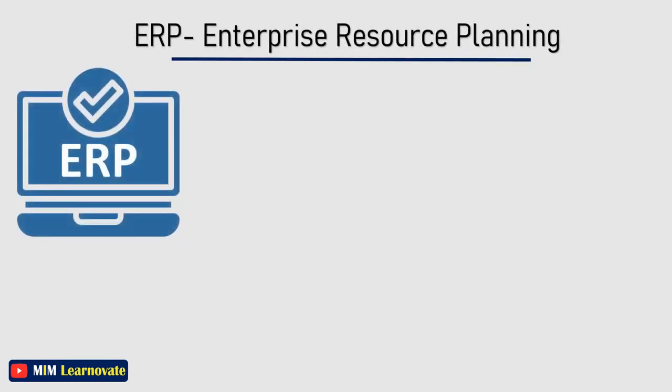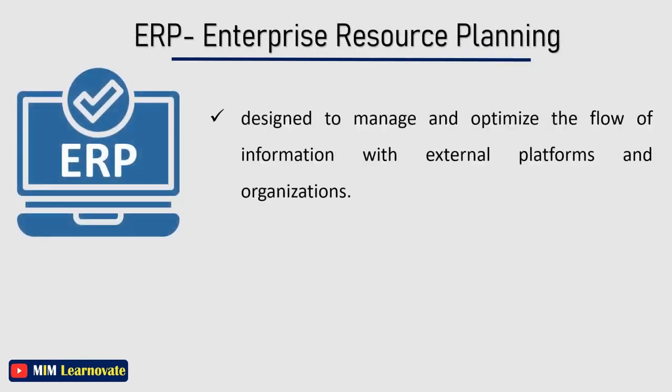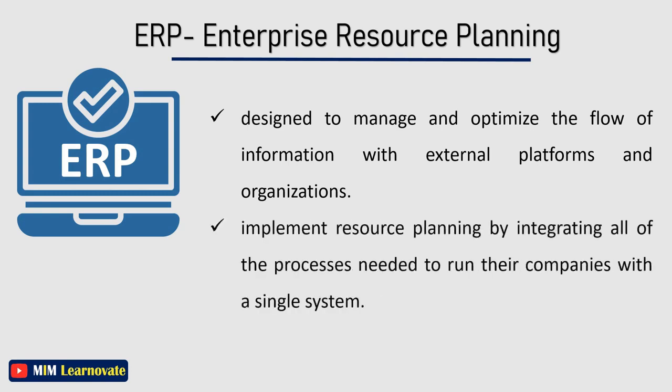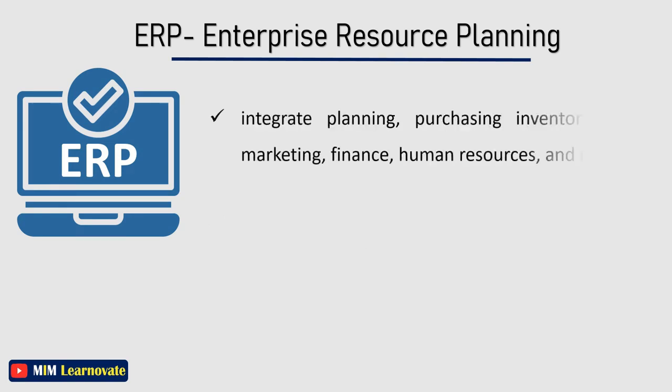Enterprise Resource Planning is a system designed to manage and optimize the flow of information not just between internal business systems, but also in regard to the connections a business has with external platforms and organizations. It helps implement resource planning by integrating all of the processes needed to run a company with a single system. An ERP software system can also integrate planning, purchasing inventory, sales, marketing, finance, human resources, and more.